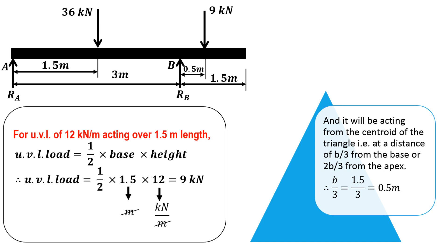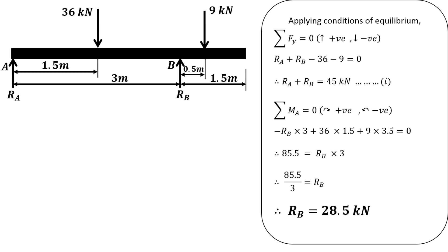Now that we have converted UDL and UVL into point loads, we calculate the reactions by applying the conditions of equilibrium. Summation of forces in the y-direction equals zero. Upward forces are positive; downward forces are negative. RA and RB act upward (positive), while 36 and 9 kilonewton act downward (negative), giving RA plus RB equals 45 kilonewton.